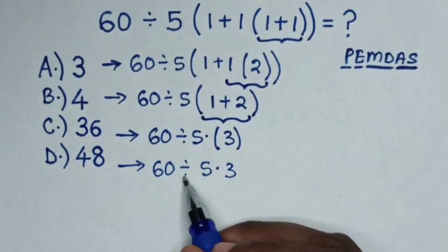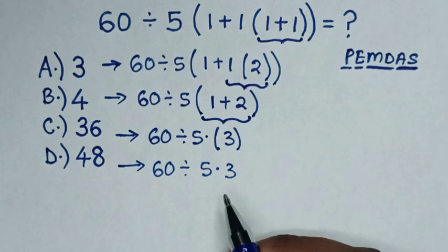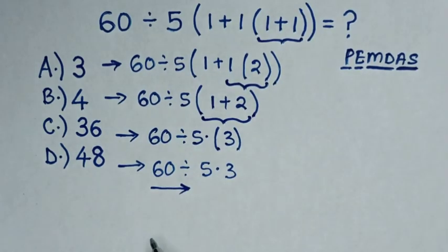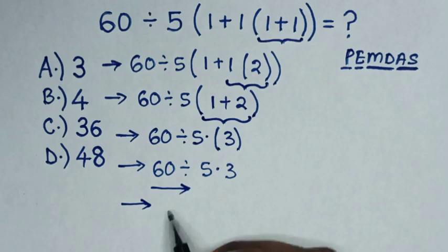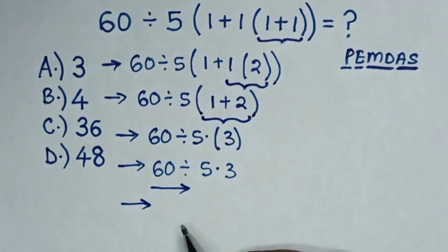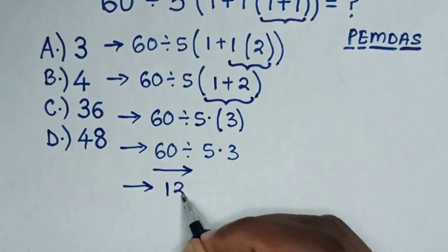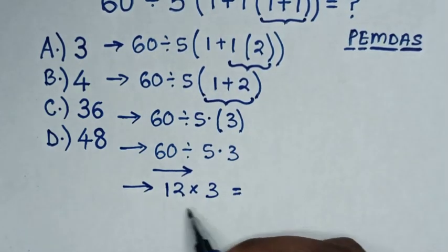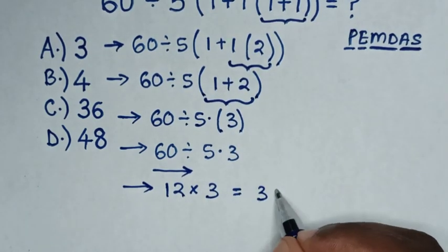Now from here we have division and multiplication, so we'll work from left to right. Then it will be 60 divided by 5, which is 12, then times 3. Then it will be equal to 12 times 3, which is 36.